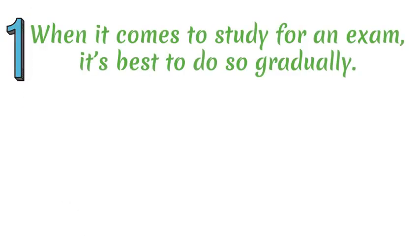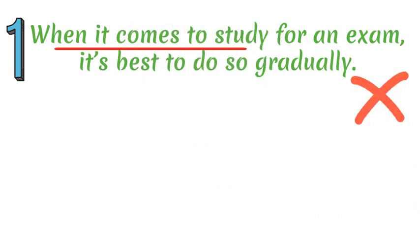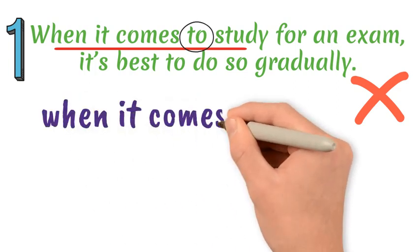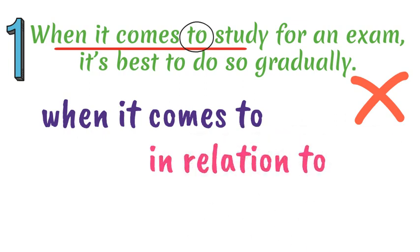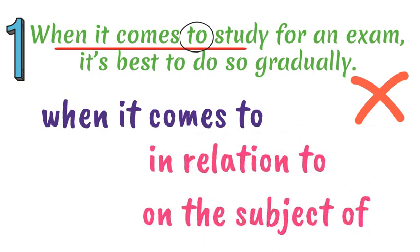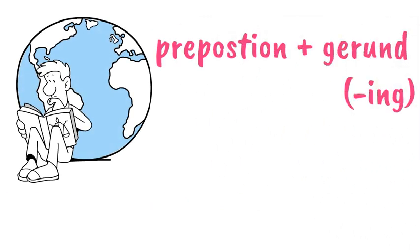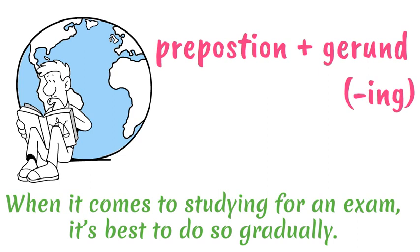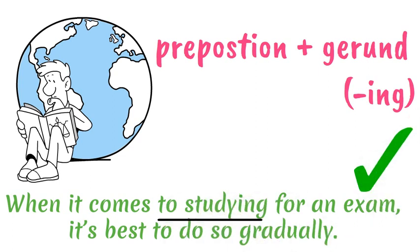Mistake number one. This first mistake occurs because of the assumption that the word 'to' is part of an infinitive form of a verb, but actually it acts as a preposition. This is because it belongs to the structure 'when it comes to', which means 'in relation to' or 'on the subject of'. This must be followed by a noun or a gerund form of the verb, as we use gerunds after prepositions. For example: 'When it comes to studying for an exam, it's best to do so gradually.'